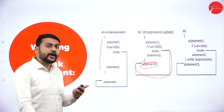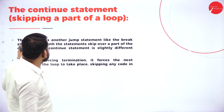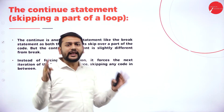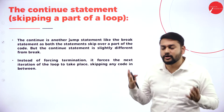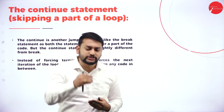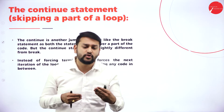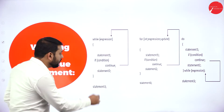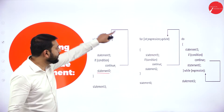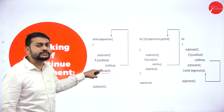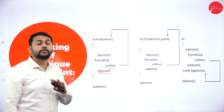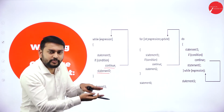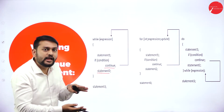With respect to continue: as I told you, continue is used to skip one iteration. A loop has many iterations depending on your condition or count. If you want to skip a particular iteration, you use continue. When continue is encountered, I will not execute the remaining statements after it - instead, I go back to the beginning of the loop for the next iteration.